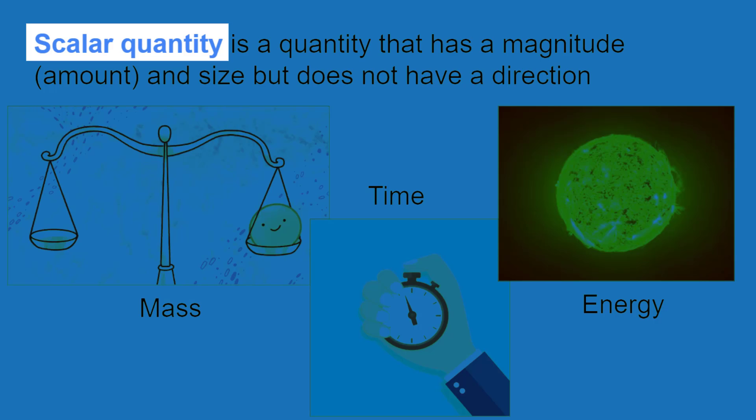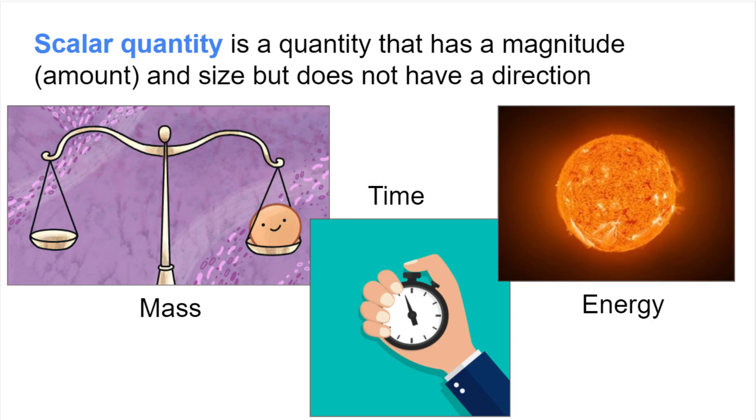A scalar quantity is a quantity that has a magnitude and size, but does not have a direction. A few examples of these quantities are mass, time, and energy. Scientists use these scalar quantities to describe the world around them with precise values.